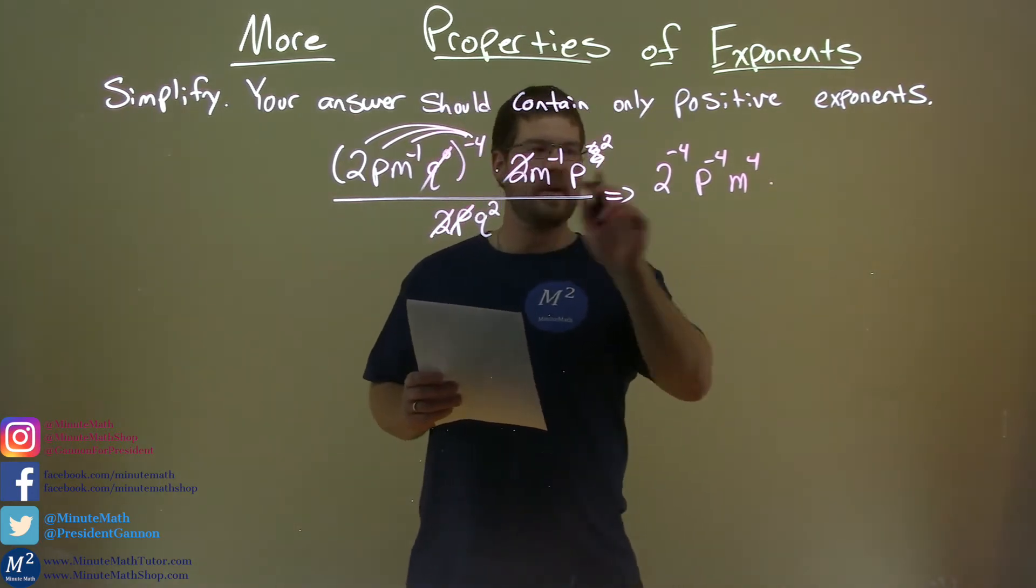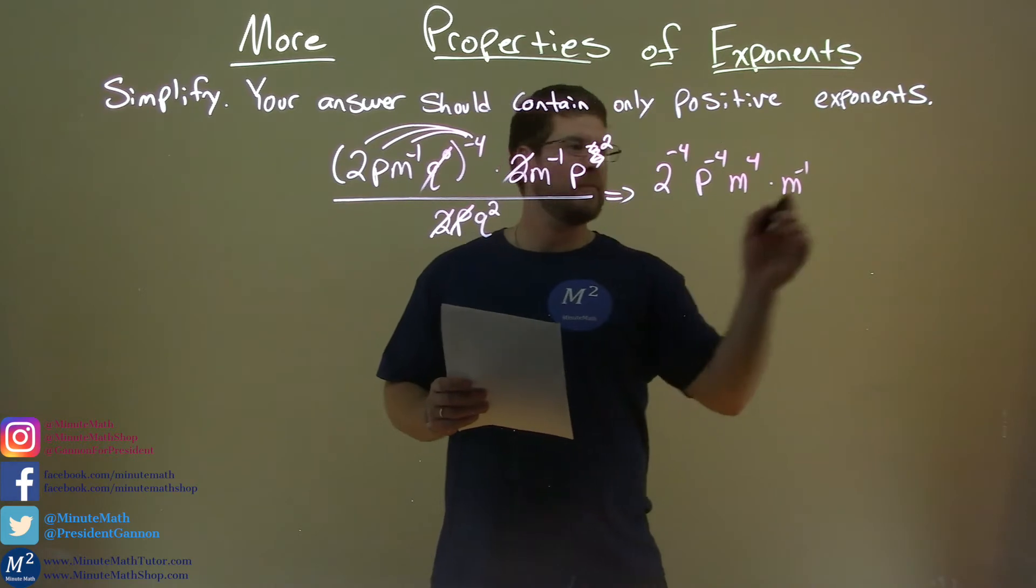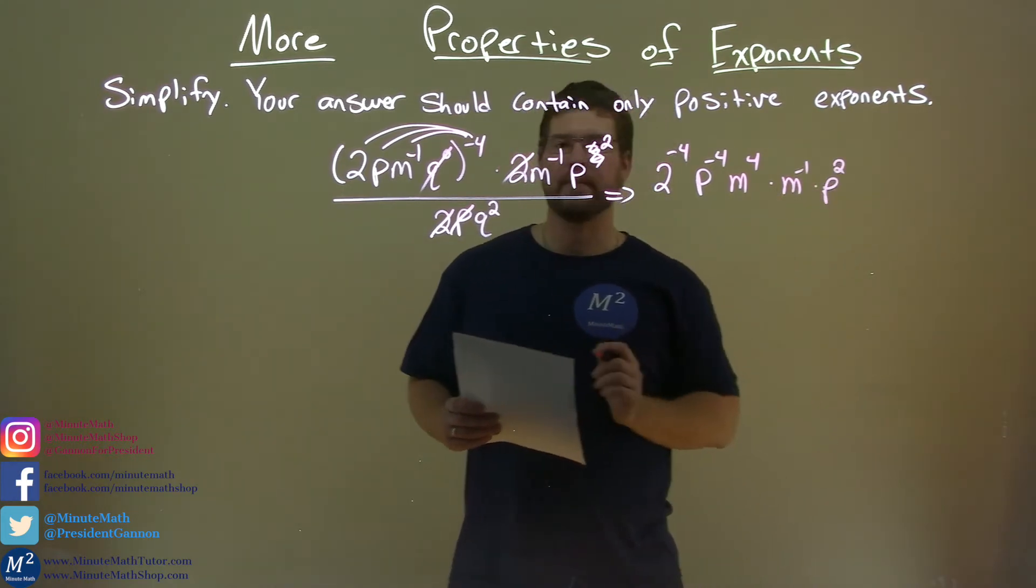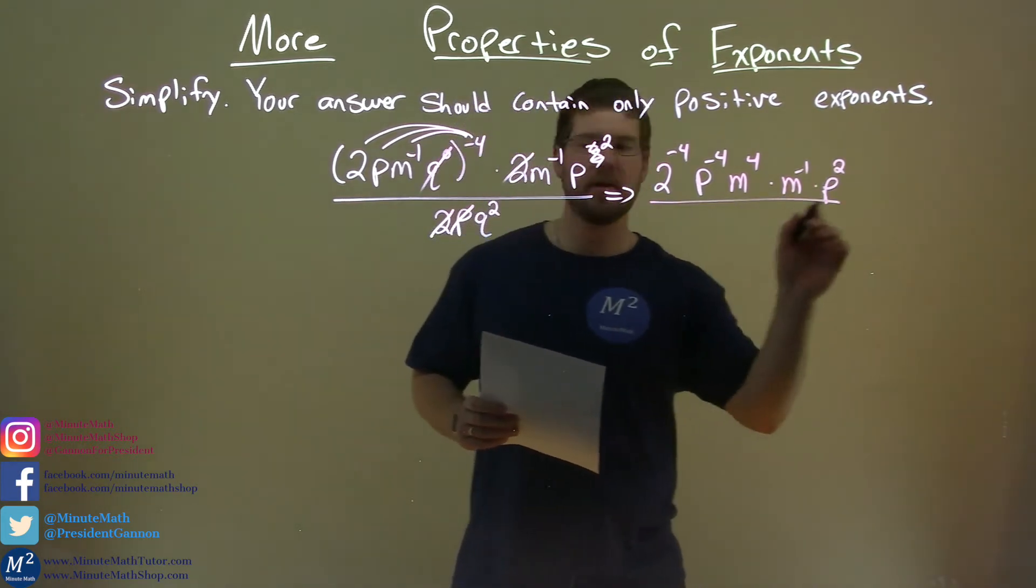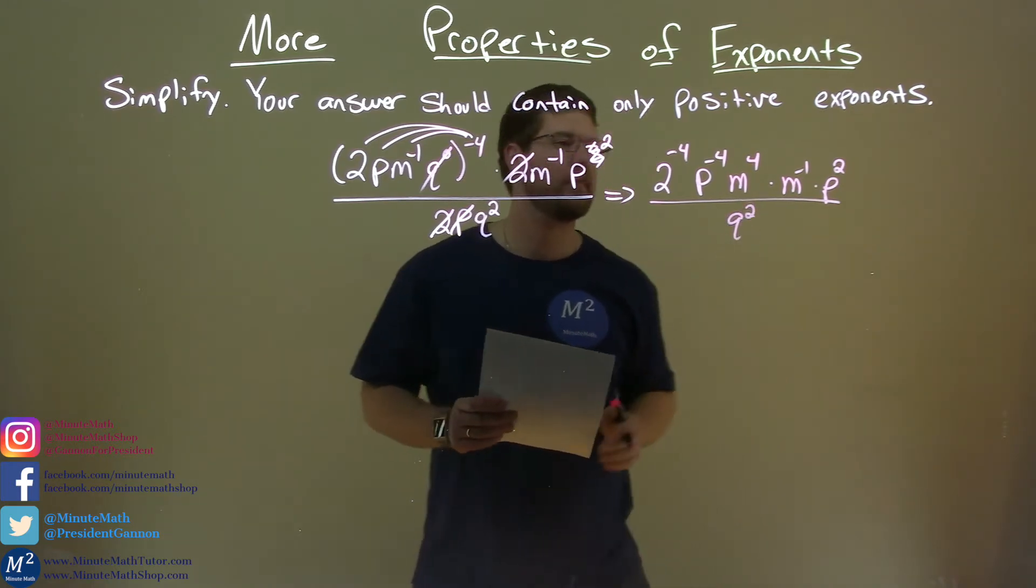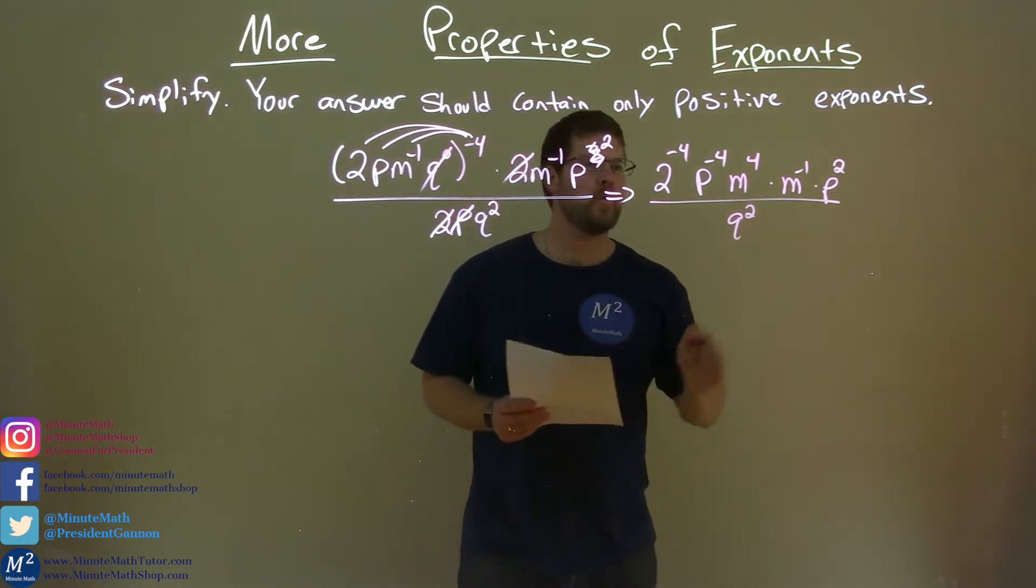Times what's left, m to the negative 1 times p squared. Okay? Denominator here is just q squared. All right. So where can we go from here?